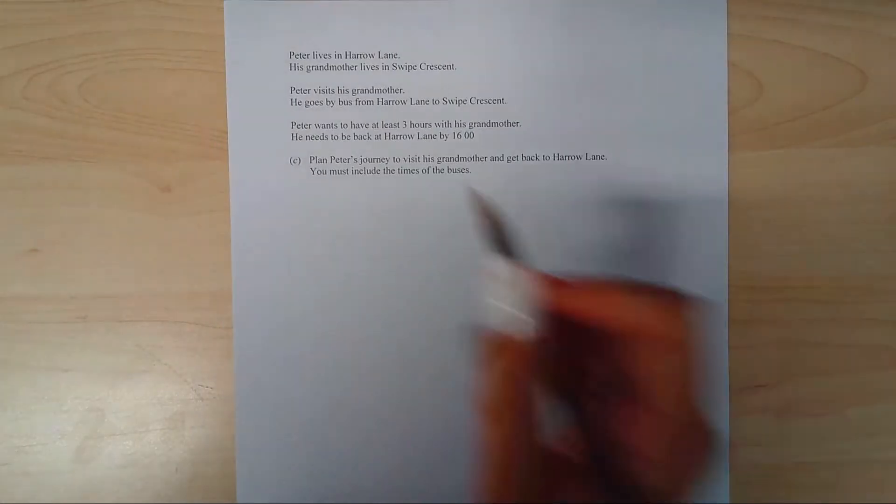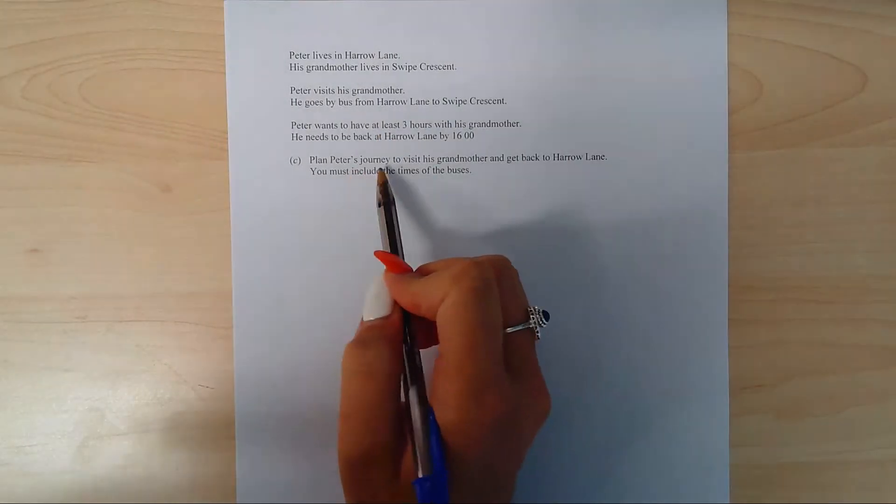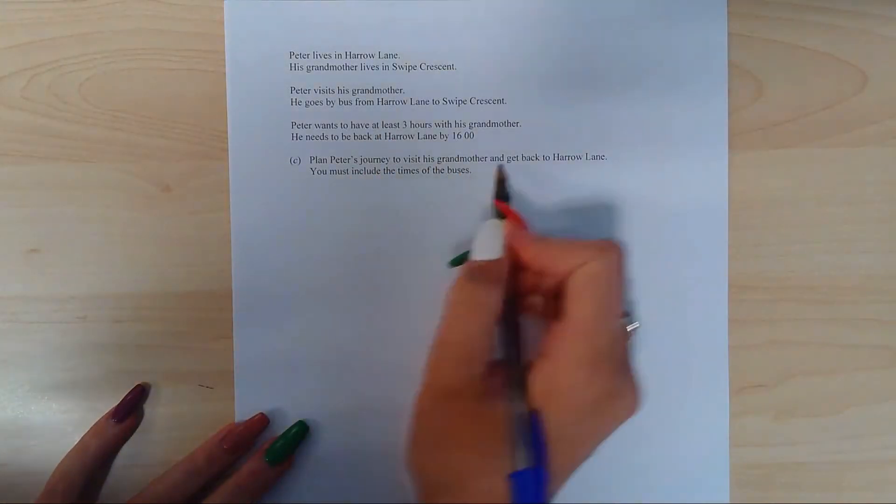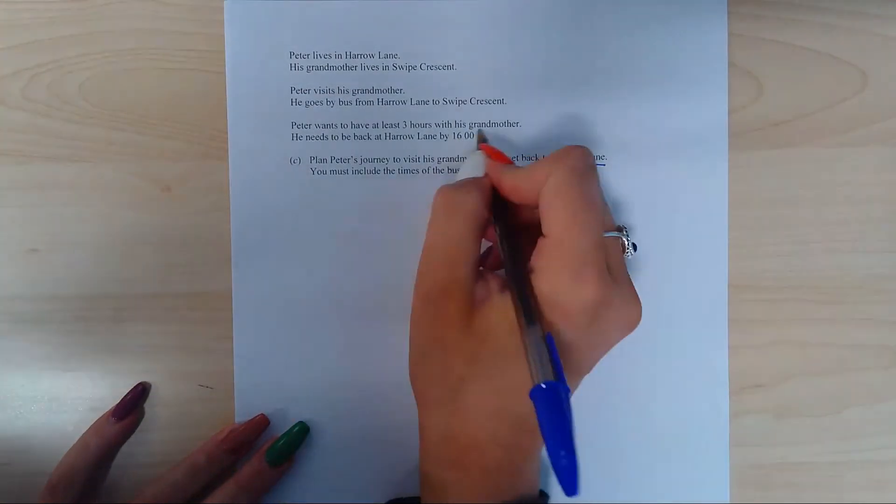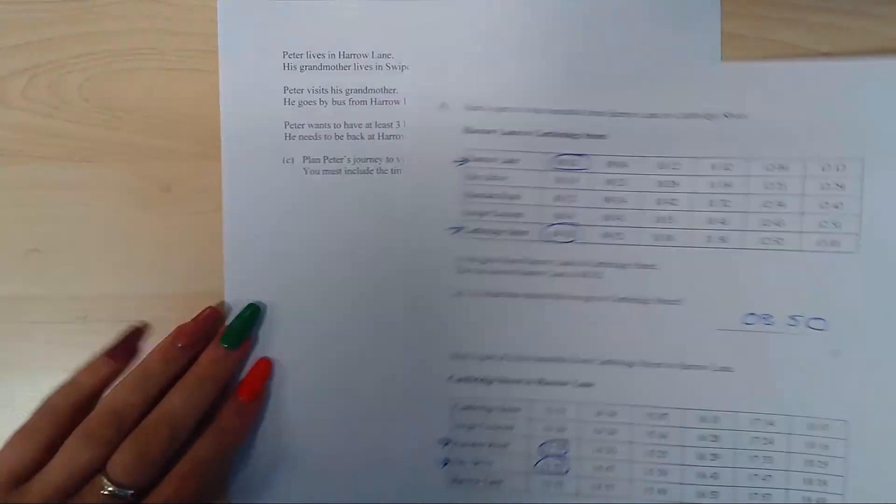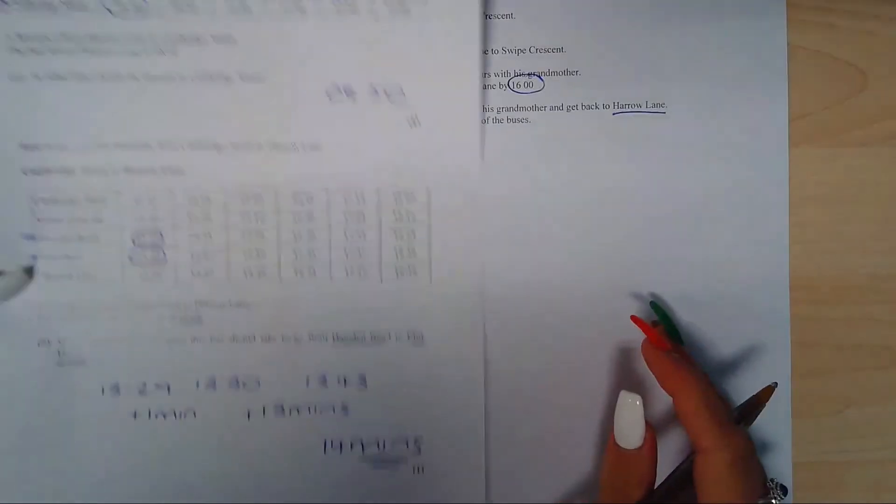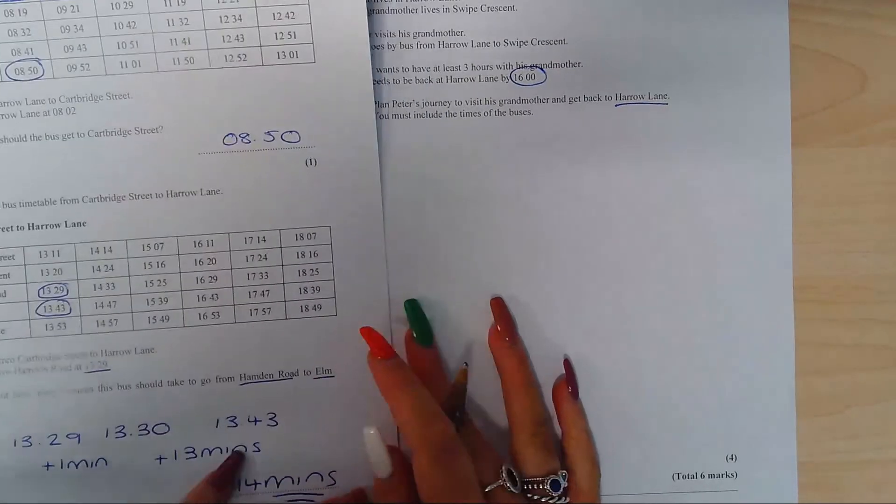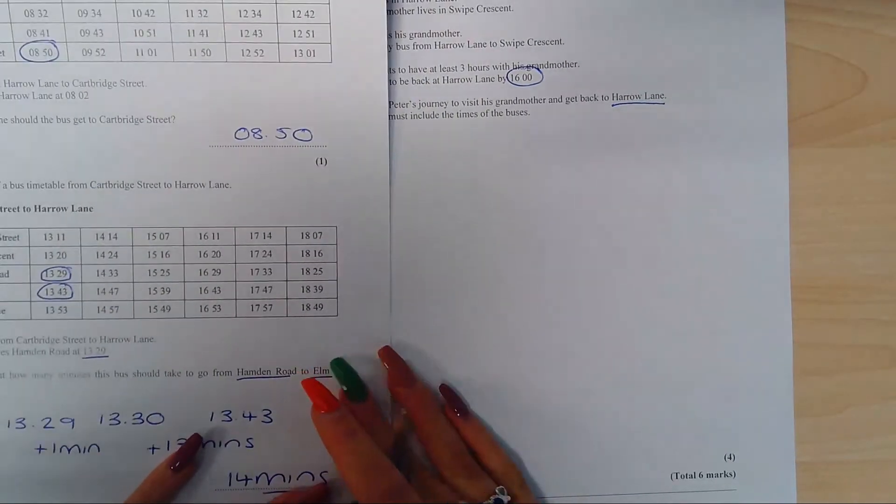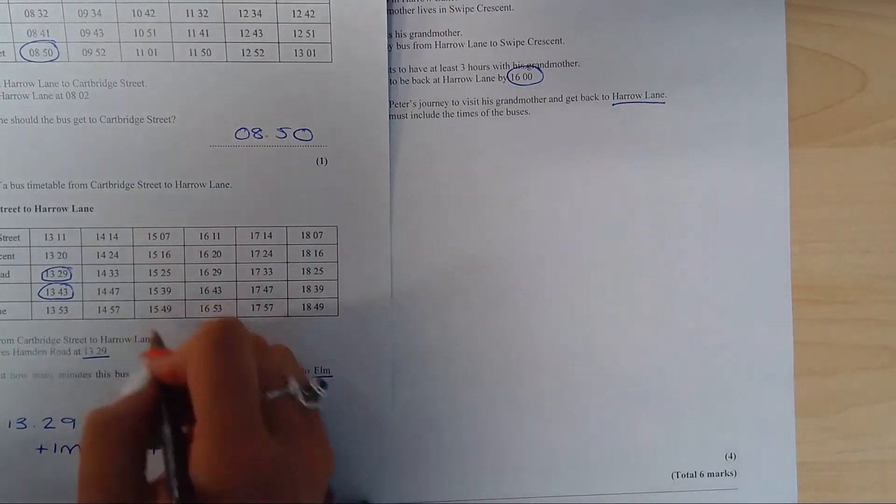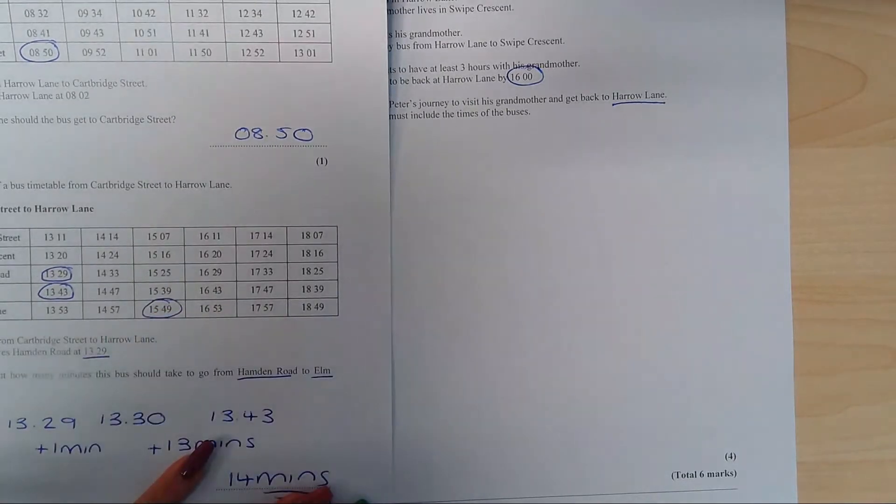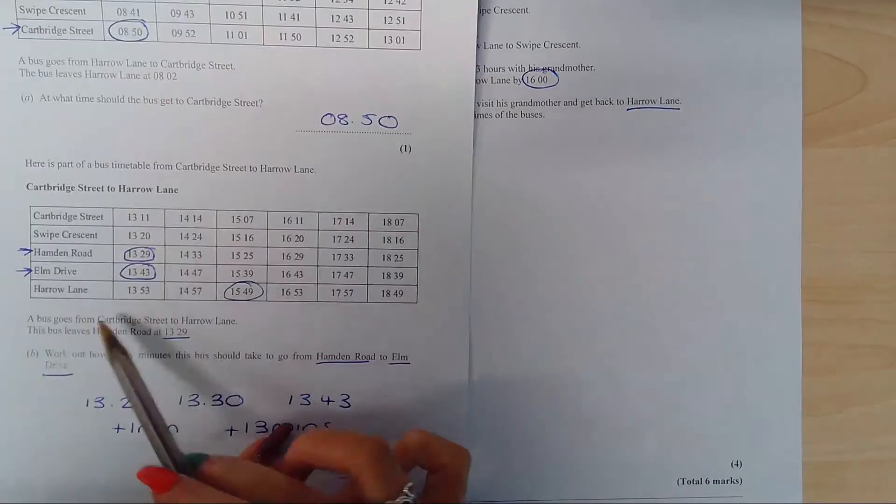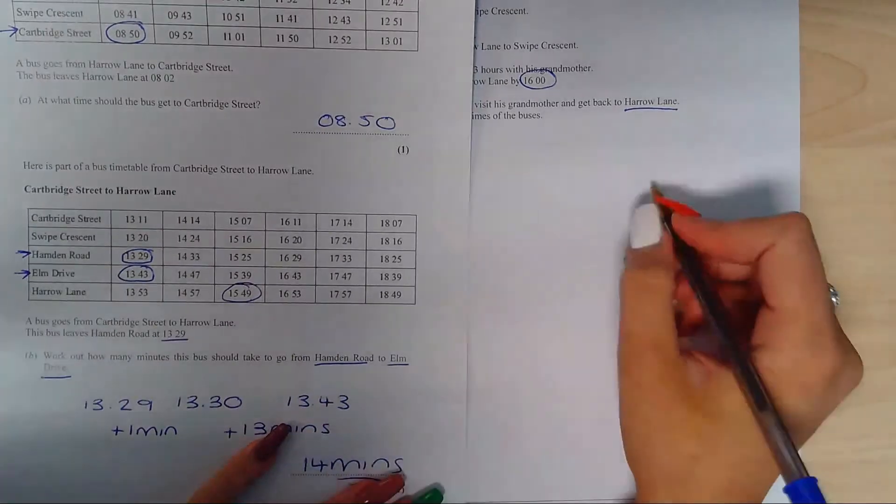Part C then, so it's asking us to work out and plan Peter's journey, visiting his grandmother and getting back to Harrow Lane by 4 p.m. So using the tables you've got from the other page, we need to find out the latest bus that Peter can get on in order to get back to Harrow Lane by 4 p.m., which is actually this bus here, arriving back at Harrow Lane at 15:49.